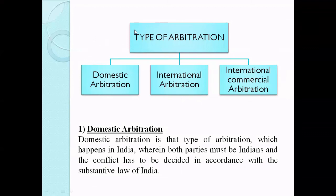There are three types of arbitration: domestic arbitration, international arbitration, and international commercial arbitration. Domestic arbitration is that type of arbitration which happens within a country. When both the parties are from the same nation, we call it domestic arbitration. For example, when both parties are from India and they decide to resolve their dispute by way of arbitration, we say they have adopted domestic arbitration.